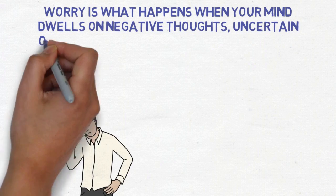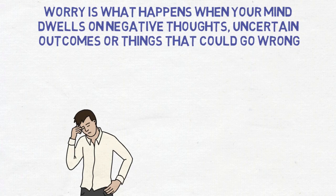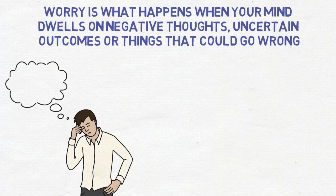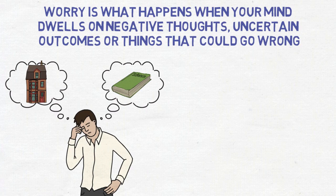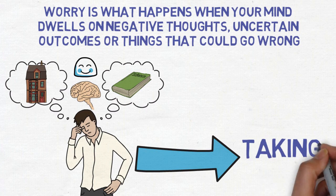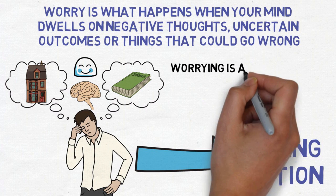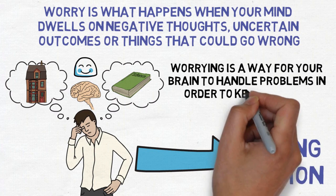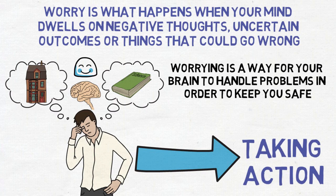Worry is what happens when your mind dwells on negative thoughts, uncertain outcomes or things that could just go wrong. When we think about an uncertain or unpleasant situation, such as being unable to pay the rent or doing badly on an exam, our brains become stimulated. When we worry, it calms our brains down and is also likely to cause us to problem-solve or take action. In a way, worrying is a way for your brain to handle problems in order to keep you safe.